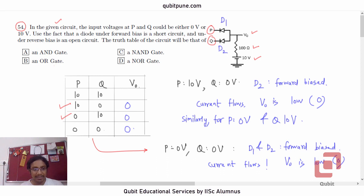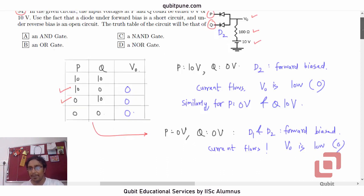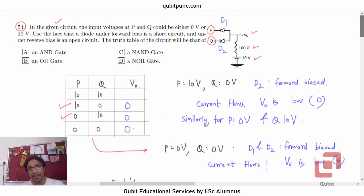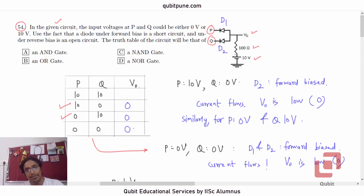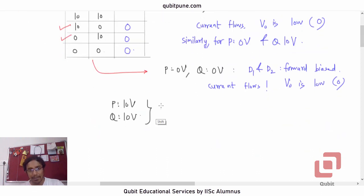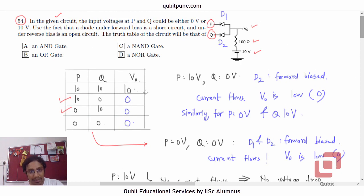And now let us finally analyze the last case where both the inputs are high. So when both P and Q are at 10V, what do you expect? There won't be any potential difference. So there won't be any current flowing through the resistor. No current flows means no voltage drop. Therefore, V0 is high.